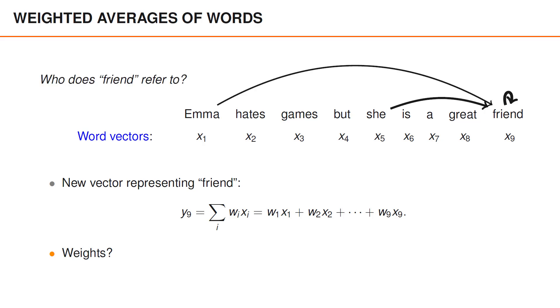One could imagine that we would like the new word embedding to convey information about who the word friend is referring to. In that case, it would make sense to give she and Emma larger weights.